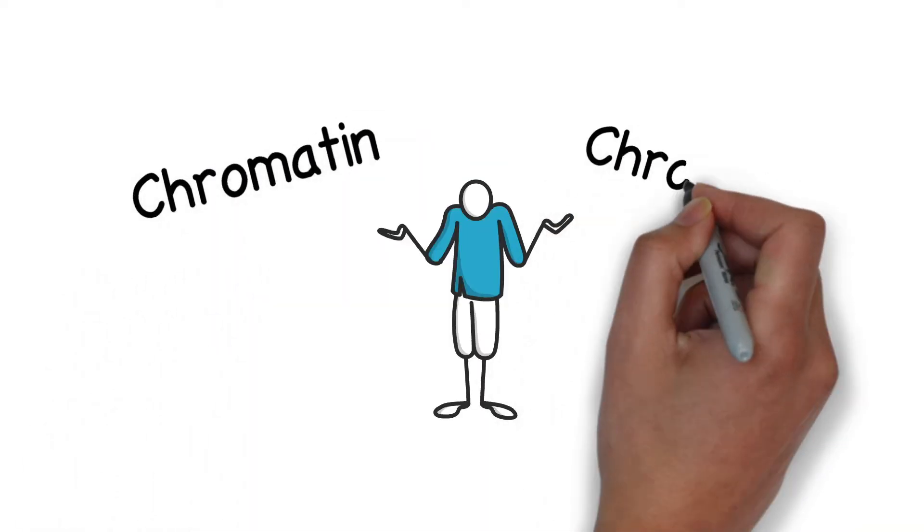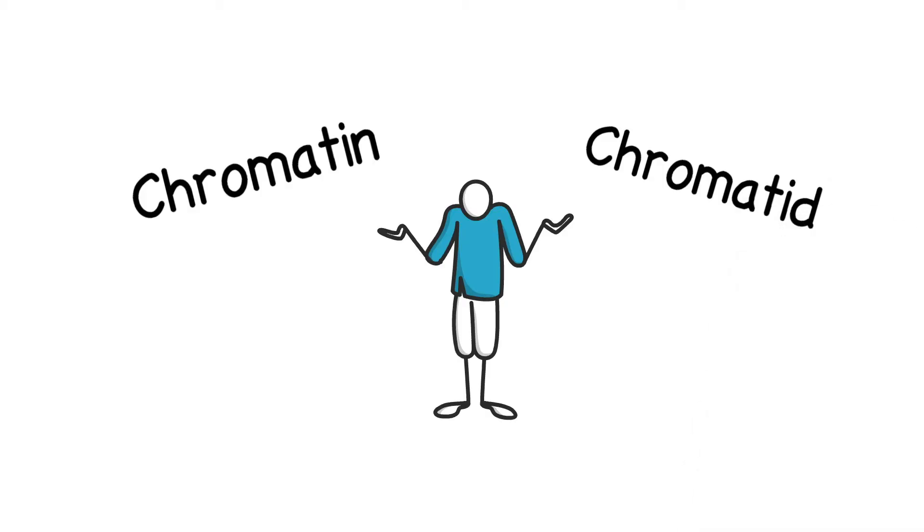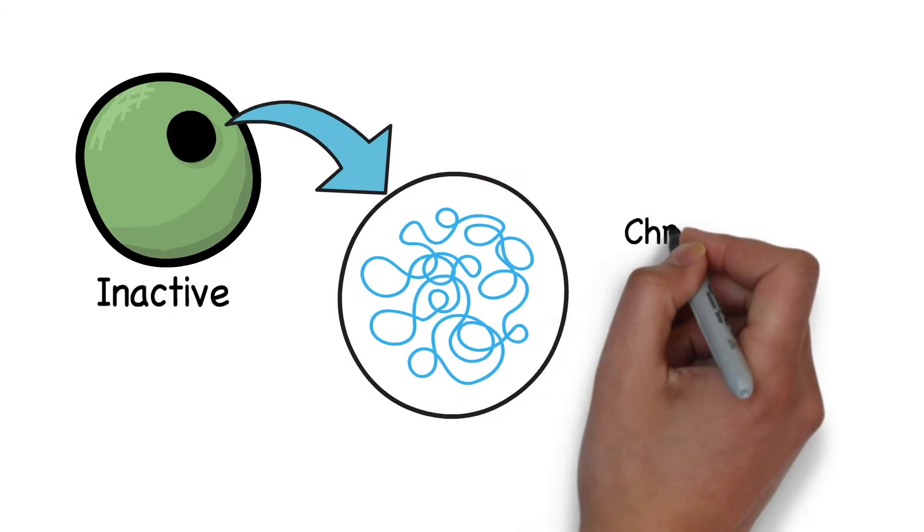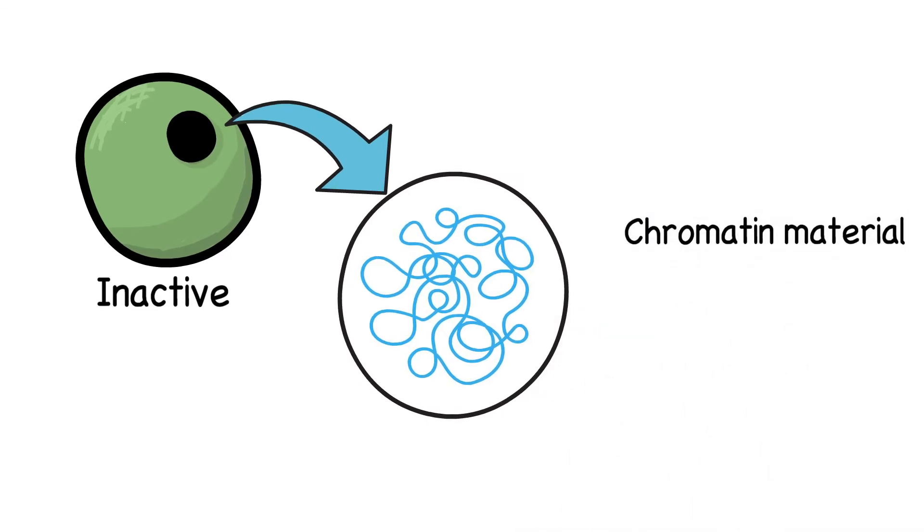To clarify the difference, let us consider a cell which is inactive, or not in a division state. Its nucleus looks something like this. The genetic material of an inactive cell looks like an intertwined noodle and is called chromatin material.